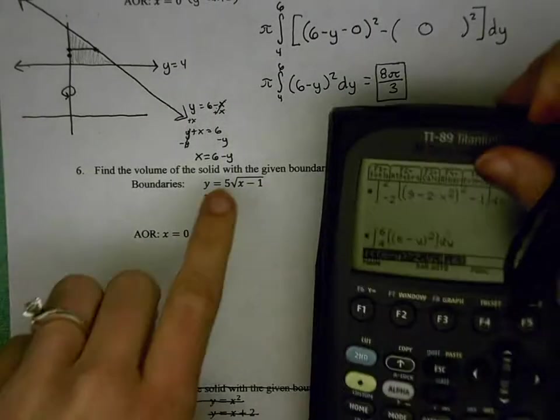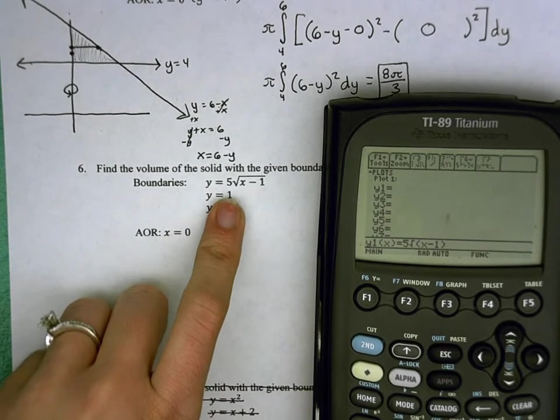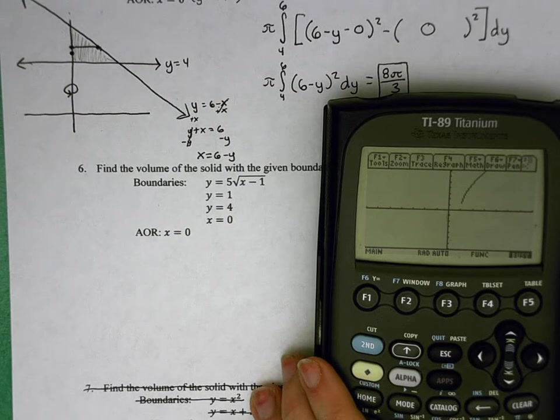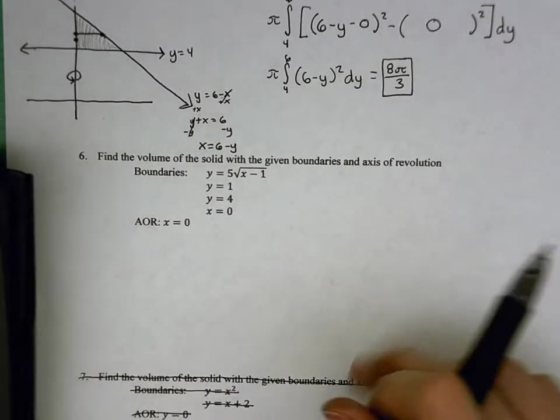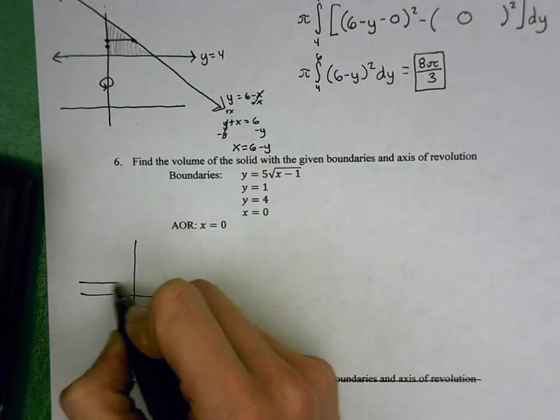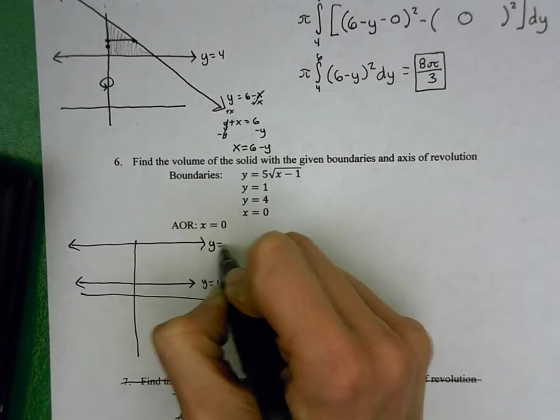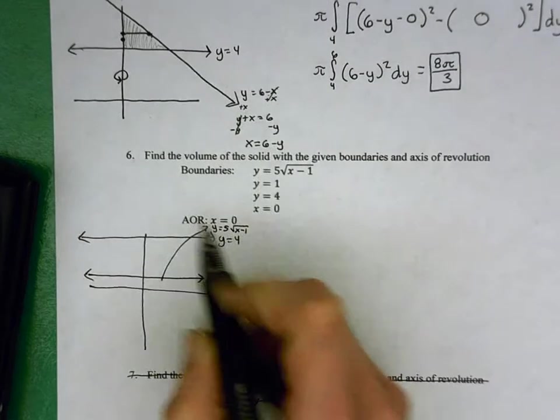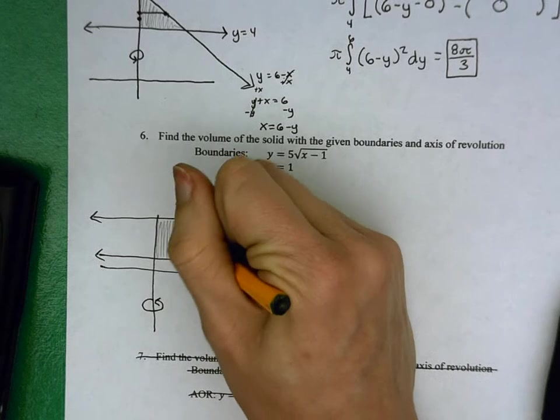So number 6, we're going to start with graphing it. We have our y equals 5 root x minus 1, y equals 1, y equals 4. It gives me this picture. We have our graph, we have our y equals 1, our y equals 4, and our y equals 5 root x minus 1. Our axis of revolution is around the y-axis, which means, again, since we're going around the y-axis, our integral is going to be in terms of y.